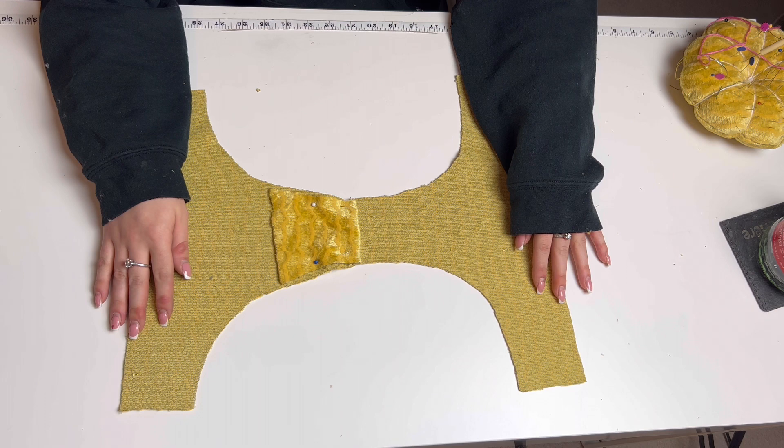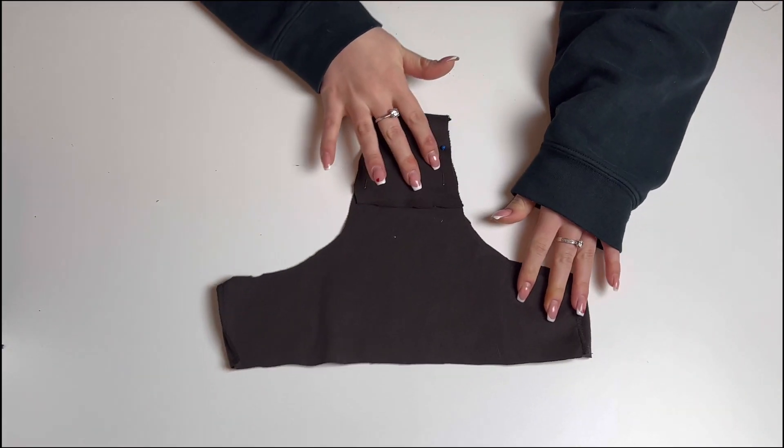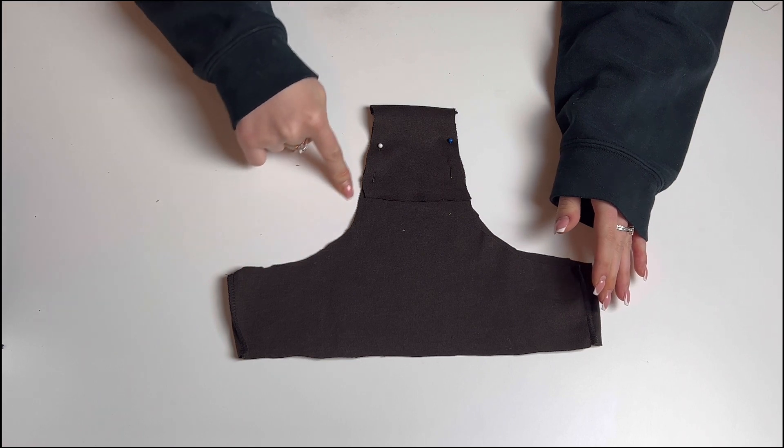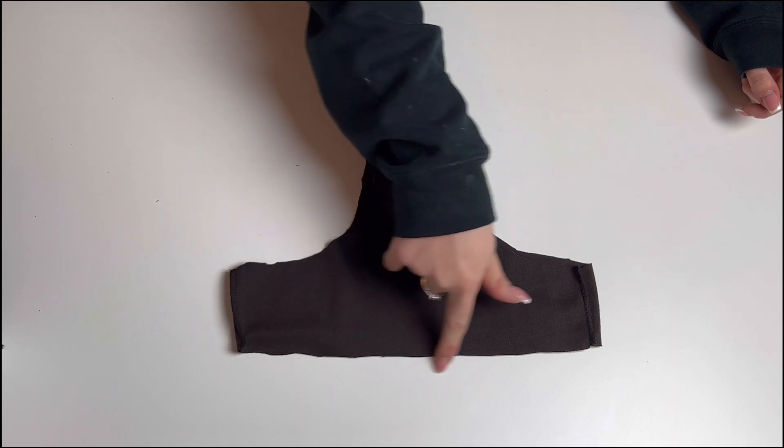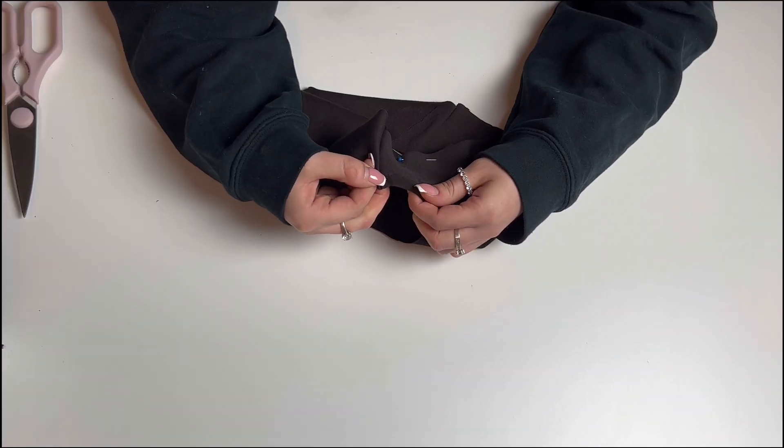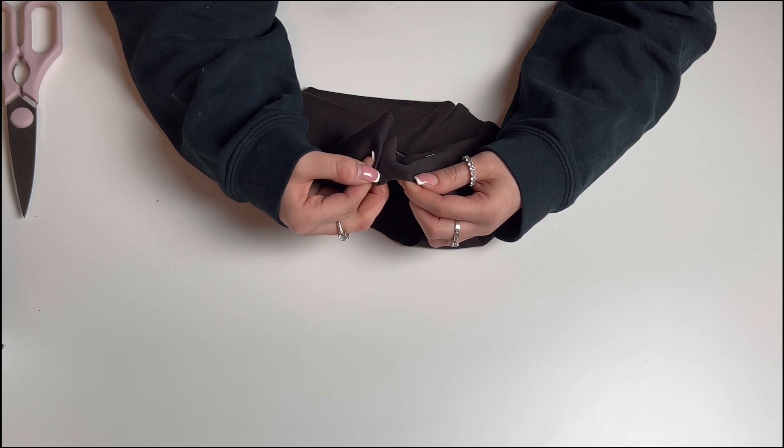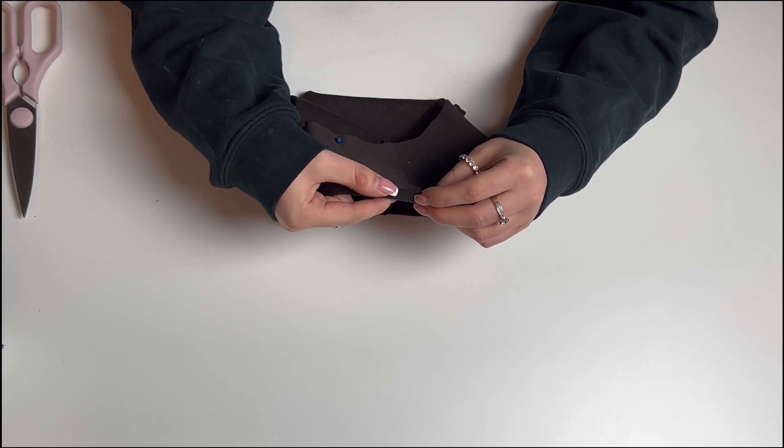Now join your pants right sides together and sew the side seams. Now that your pants are starting to look a little bit more like pants, you want to fold over all the raw edges and stitch them down with a zigzag stitch. It's a lot easier if you fold and press your seam first and add a few pins along the way to make sure that your seam is straight.